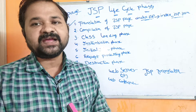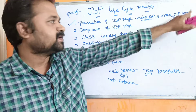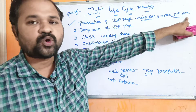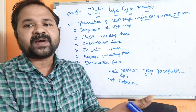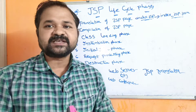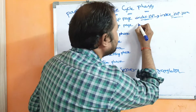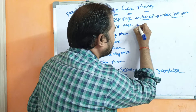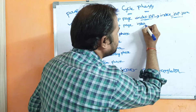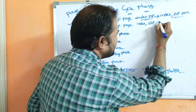We know that compilation is done by the Java compiler. The Java compiler compiles the Servlet program. So Index_JSP.java will be internally compiled by the compiler. We know that the compiler produces bytecode, and bytecode is nothing but the class file. So Index_JSP.java is compiled and it produces Index_JSP.class file.